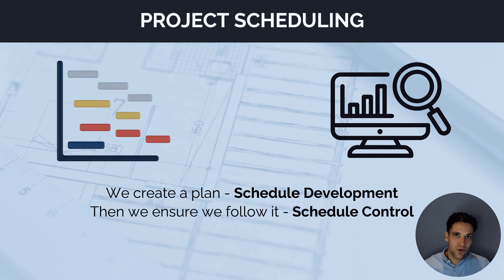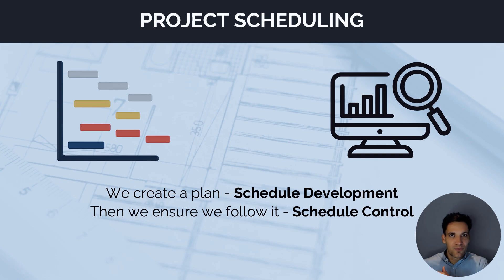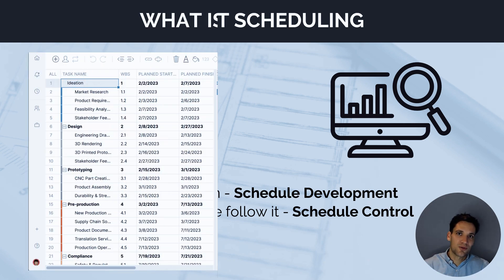So there are two core components of project scheduling: schedule development — building a plan — and scheduling control, which is implementing and ensuring we actually do what we said we were going to do.